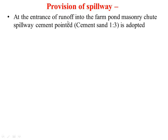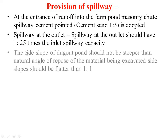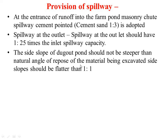Coming to the provision of spillway: at the entrance of runoff into the farm pond, a masonry chute spillway with cement-sand ratio 1:3 is adopted. The spillway at the outlet should have 1.24 times the inlet spillway capacity. Outflow from the farm pond should be safely diverted into grass waterways downstream that ultimately join a natural stream. The side slope of the dugout pond should not be steeper than the natural angle of repose of the material being excavated, and the side slope should be flatter than 1:1.